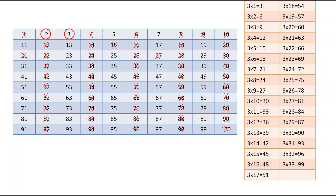Continuing the table of 3: 57 — scratch it. 60 already scratched. 63, 66 already scratched. 69, then 72 already scratched. 75 — scratch it. 78 already scratched. 81 — scratch it. 84 already scratched. 87 — scratch it. 90 already scratched. 93 — scratch it. 96 already scratched. 99 — scratch it. Next is 4, but it is already scratched, so we move to 5. Encircle 5 and check the table of 5: 10 scratched, 15 scratched, 20 scratched, 25 — scratch it. 30 scratched, 35 — scratch it. 40 scratched, 45 scratched, 50 scratched, 55 — scratch it. 60 scratched, 65 — scratch it. 70 scratched, 75 scratched, 80 scratched, 85 — scratch it. 90 scratched, 95 — scratch it. 100 already scratched.